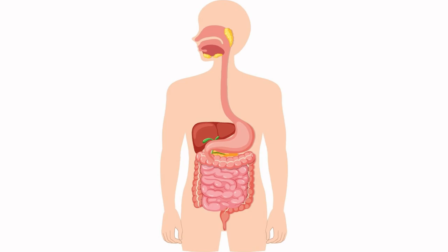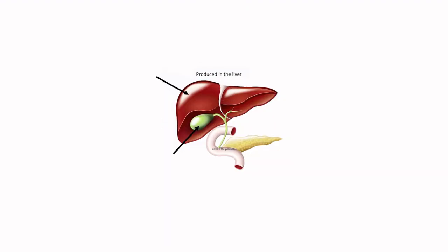Let us now break down the chemical functions across the small intestine. As the chyme enters the small intestine through the duodenum, it mixes with bile and pancreatic juices that further break down nutrients. Food coming from the stomach is acidic and has to be made alkaline for the pancreatic enzymes to act. Bile is produced by the liver and stored in the gallbladder, and one of its roles is to neutralize the pH of the chyme.